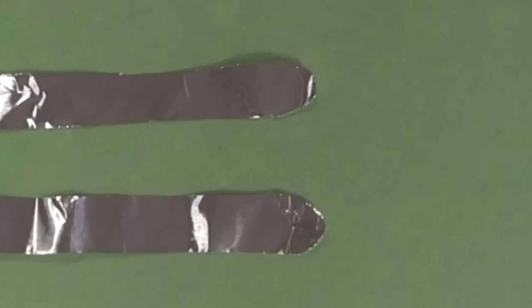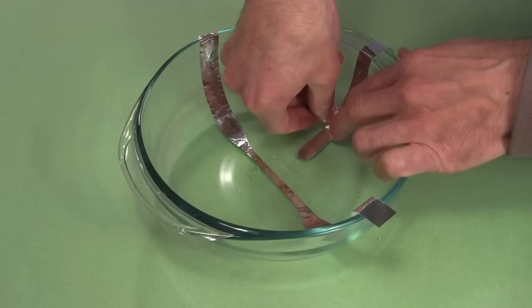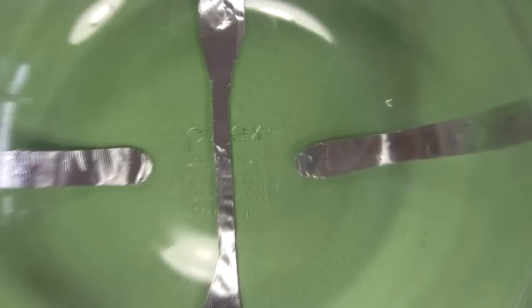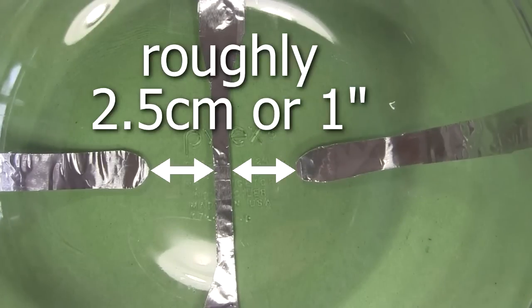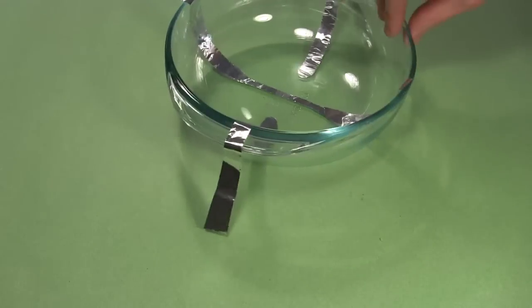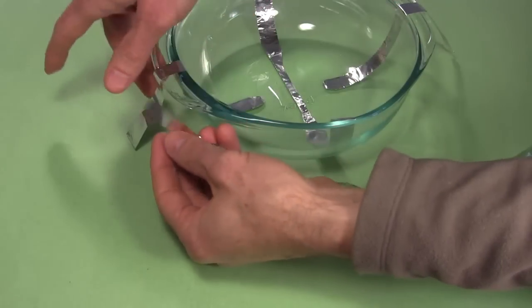The other two strips are cut rounded at one end. Tape those into the bowl too, again with the tape covering as little foil as possible. The rounded ends should be in the bowl, but not too close to the first strip. The other end should extend out over the edge of the bowl. Those two strips need to be electrically connected together somehow. To do that,